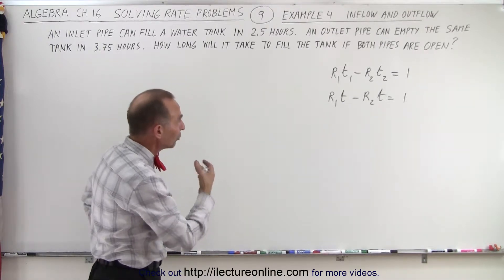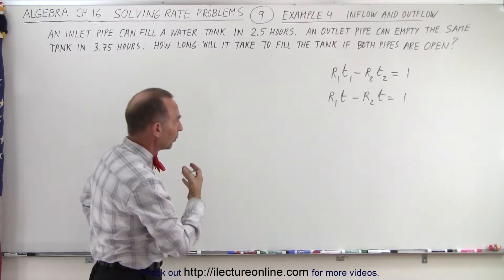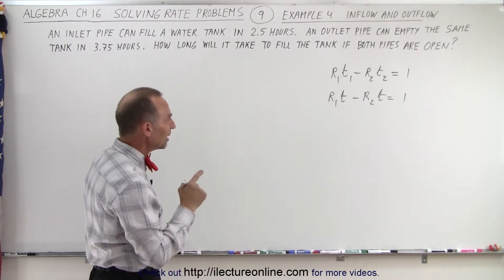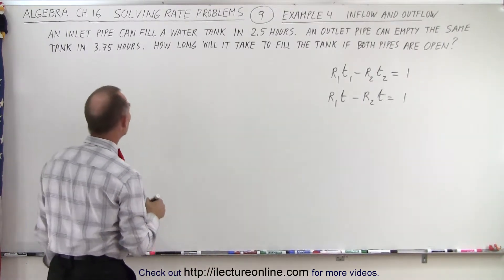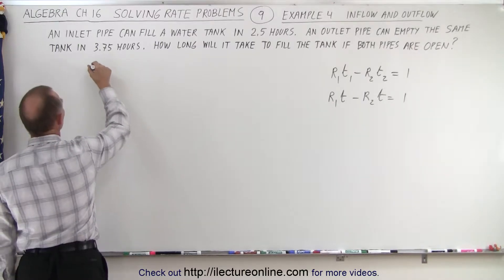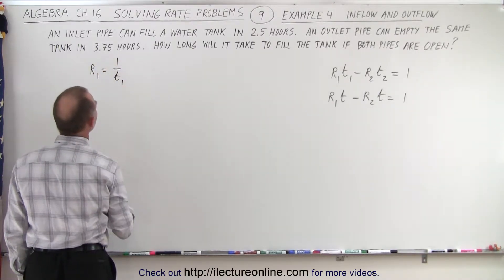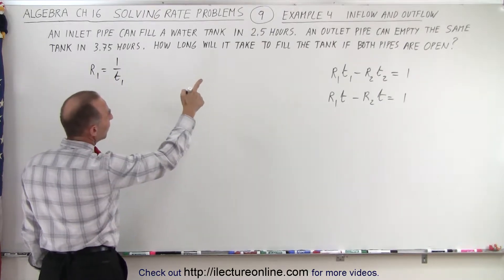The problem is finding the total time that it will take to fill the tank if both pipes are open. So now we need to find rate 1 and rate 2. Rate 1 is equal to the inverse of time 1. In this case, time 1 is 2.5 hours.